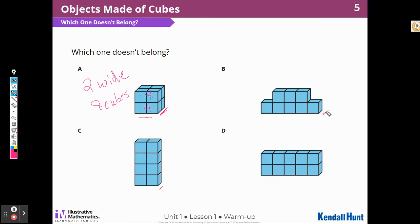This one's one, B is one wide, and D is one wide. But then when I'm looking at B, I'm noticing it's one wide, it's too tall, but I see some cubes that are missing. So it's the only one that has missing cubes. So I could have chosen B to be the one that doesn't belong because it has missing cubes.